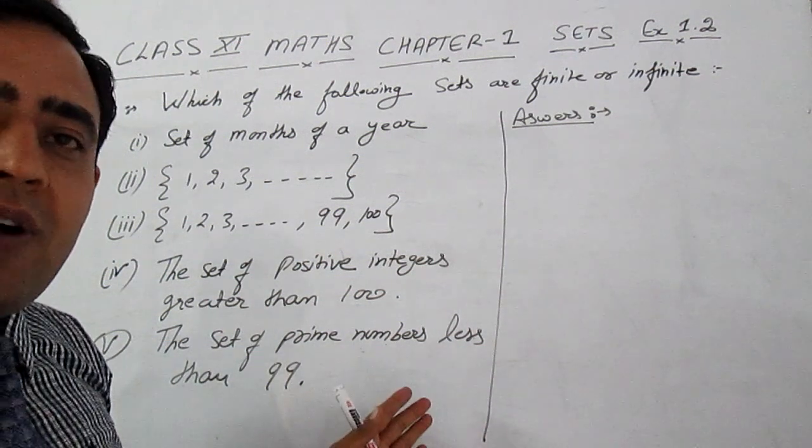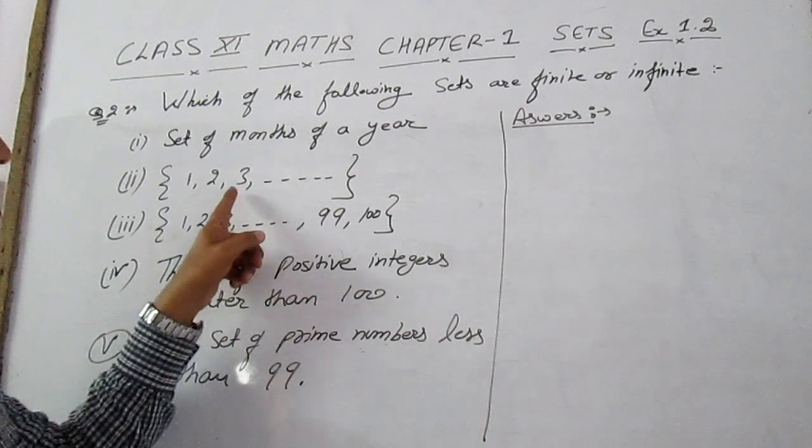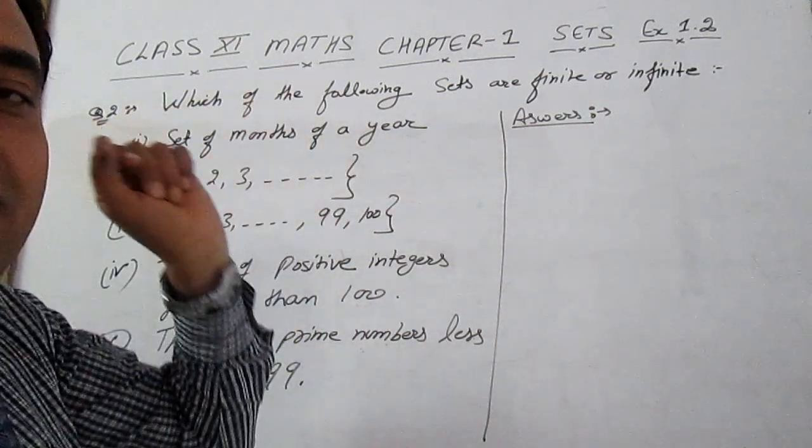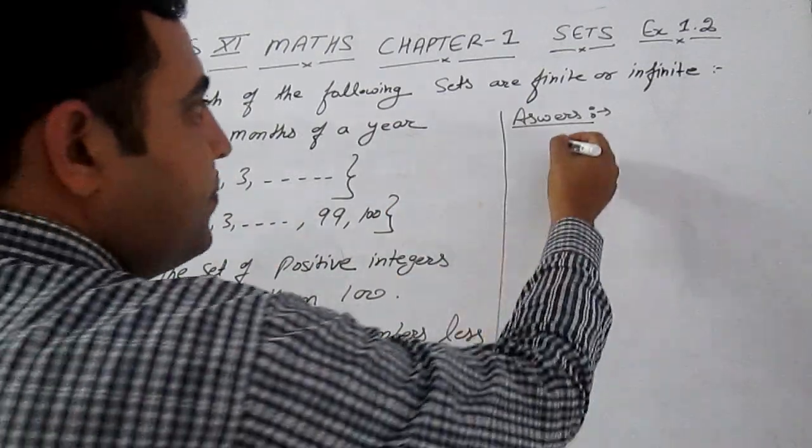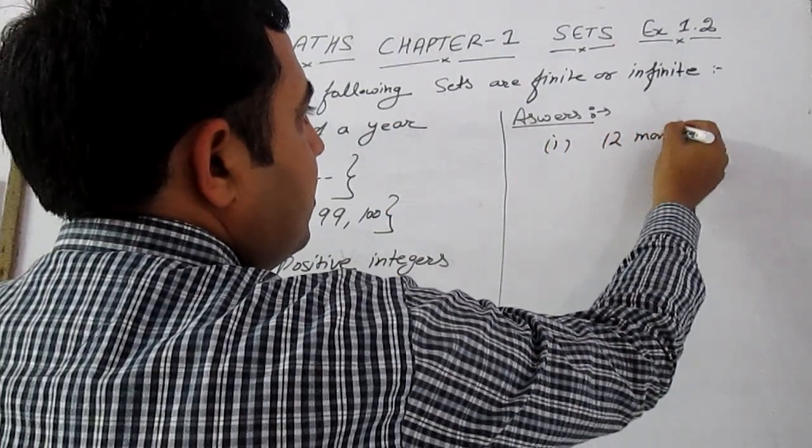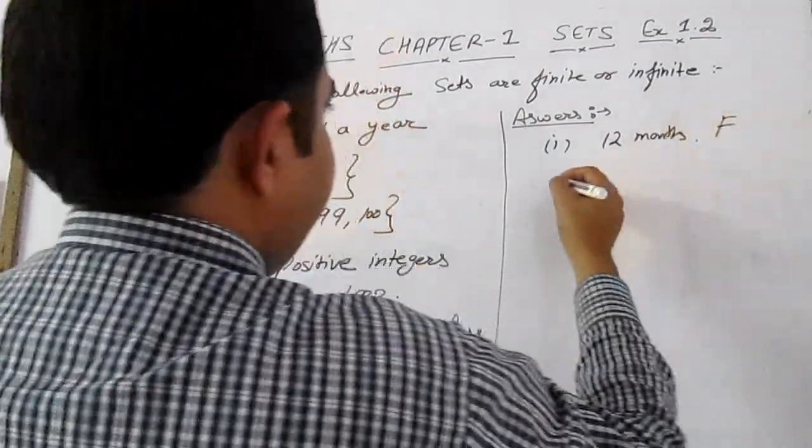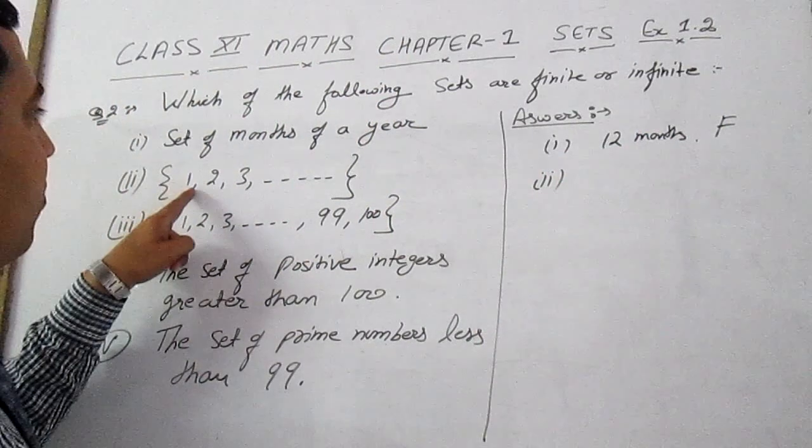Let's see. Part one: the set of months of a year. We know there are 12 months in a year, so yes, it is a finite set. Part two is {1, 2, 3, ...}.